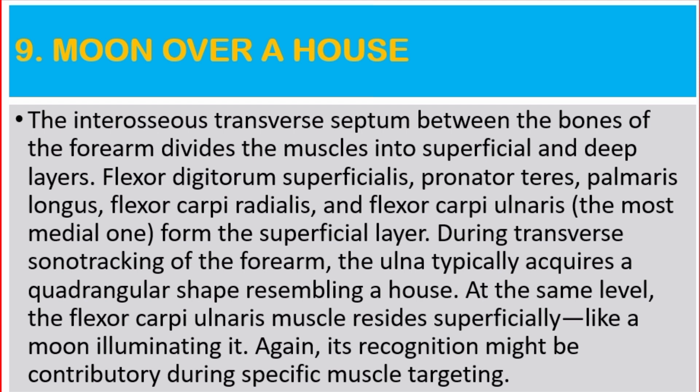Number nine: moon over house. The interosseous transverse septum between the bones of the forearm divides the muscles into superficial and deep layers. Flexor digitorum superficialis, pronator teres, palmaris longus, flexor carpi radialis, and flexor carpi ulnaris — the most medial one — form the superficial layer. During transverse scan tracking of the forearm, the ulna typically acquires a quadrangular shape resembling a house. At the same level, the flexor carpi ulnaris muscle resides superficially like a moon illuminating it. Its recognition might be contributory during specific muscle targeting.